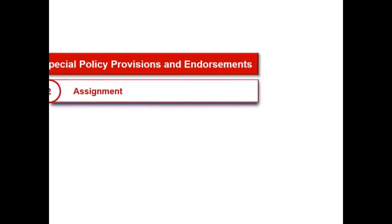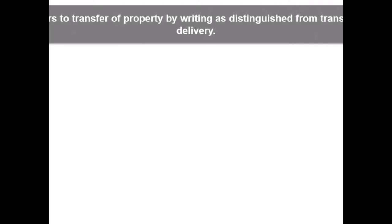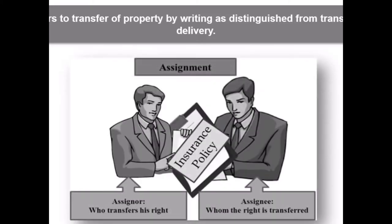In this next video of the lesson Documentation Policy Condition 2, we will learn about assignment. The term assignment ordinarily refers to transfer of property by writing, as distinguished from transfer by delivery. On assignment, nomination is generally cancelled, except when assignment is made to the insurance company for a policy loan. The assignment of a life insurance policy implies the act of transferring the right, title and interest in the policy from one person to another.